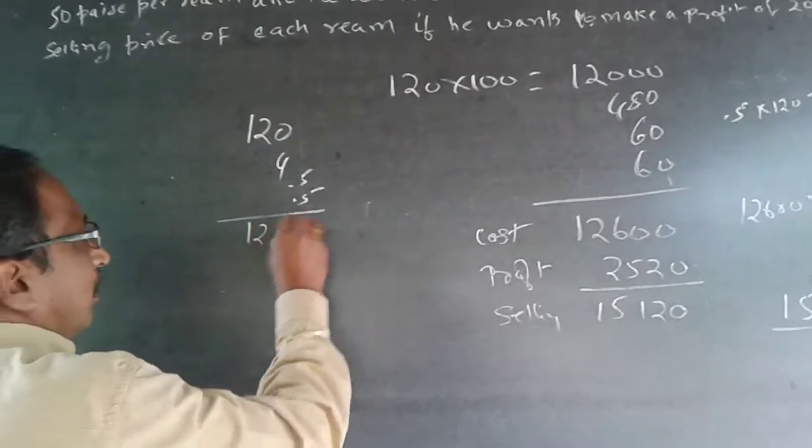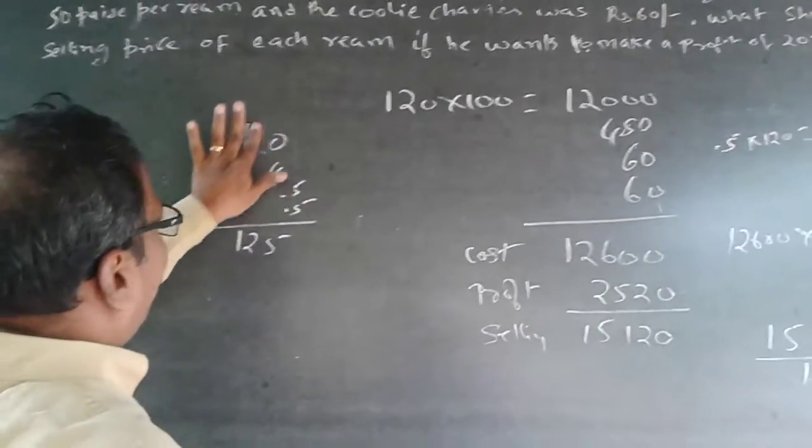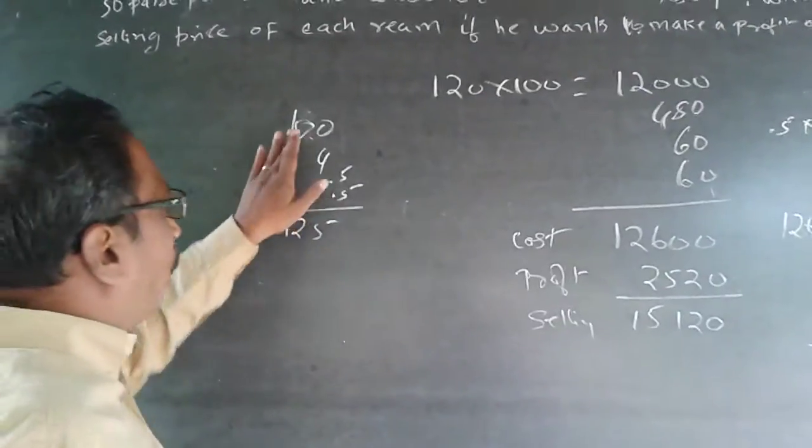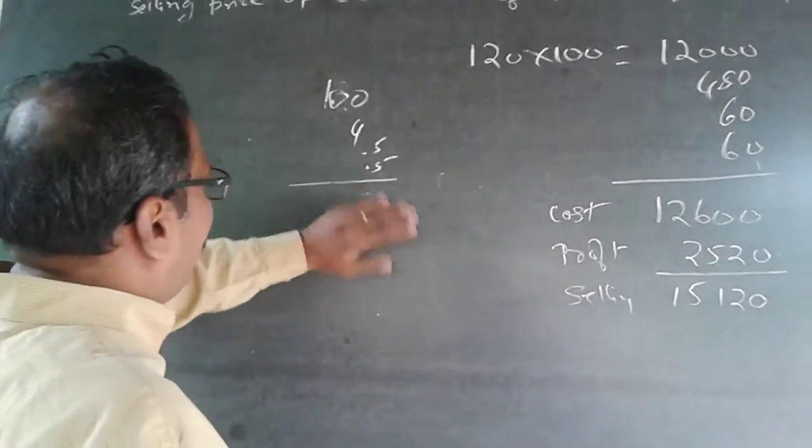This will be 125. Sorry, 100 rupees. Cost is 100 rupees because it is 100 per ream. 100, 4, and 0.5, 1 will be 105.